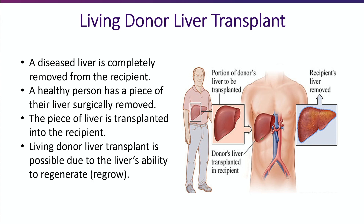Another option available at our center is living donor liver transplant. During this surgery, the diseased liver is removed, and a healthy living person donates a portion of their liver to another individual. The smaller piece of liver that is transplanted can regenerate or regrow, since the liver can grow new liver tissue. Most living donors are relatives or friends and undergo extensive testing to determine if they can donate a portion of their liver. Living donors can also be non-directed or altruistic donors. These donors decide to donate a piece of their liver to somebody in need and have no relationship with the patient.